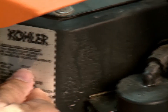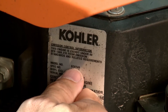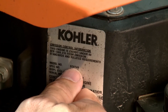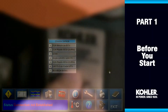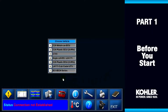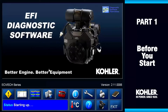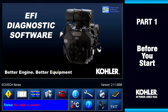Check the engine identification decal for the model number you're working on. Select the vehicle you're working with and be sure the engine key is on. Here I'm choosing the ECH ECV 630 to 749 engine. Remember, the key must be turned on to communicate. After we select the engine, the main screen is displayed. Check the status bar on the lower left to confirm the connection.